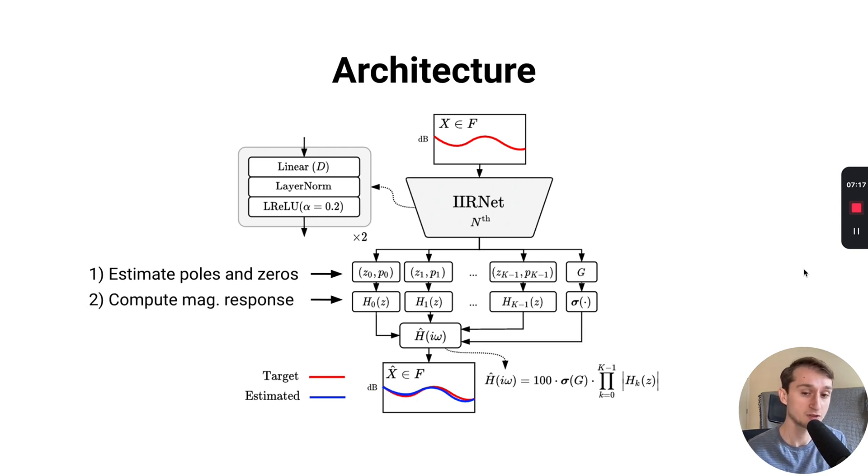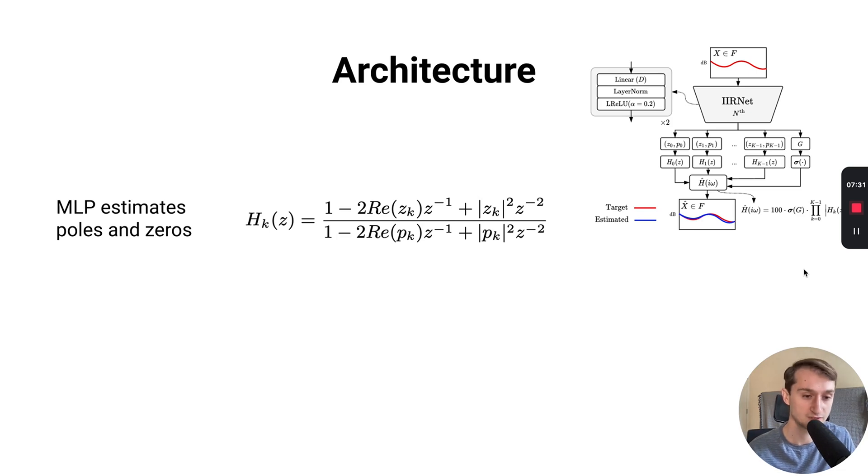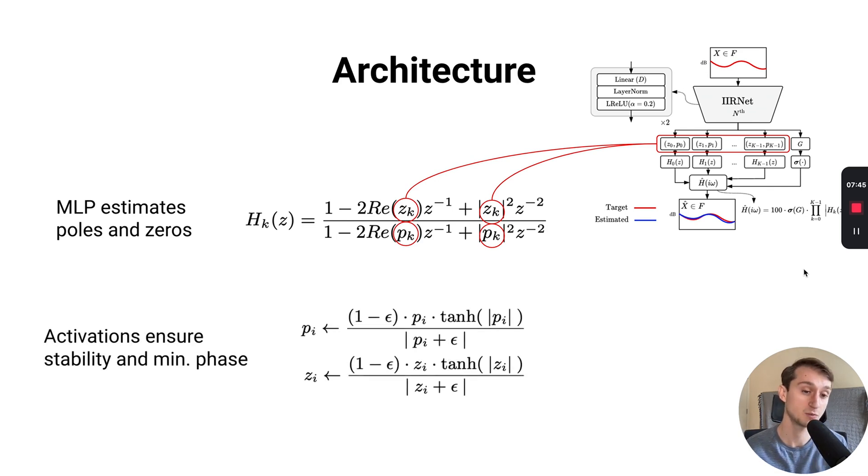The result is that at the output of the network, instead of predicting the numerator and denominator coefficients directly, we actually predict a pole and zero for every second-order section, and we fix the number of second-order sections at training. Then given each of those poles and zeros, we can compute the magnitude response for each, and then compute the overall magnitude response as the product of those sub-biquad section responses, and compute some error between the target and estimated response. We can represent the transfer function as a function of these poles and zeros. We can also go one step further with this parameterization by applying specialized activation functions which restrict the range of the poles and zeros, keeping them both inside the unit circle with space to ensure they never touch the edge or get too close where stability may become an issue. This approach ensures both stability and minimum phase filters in our design.